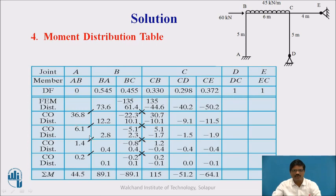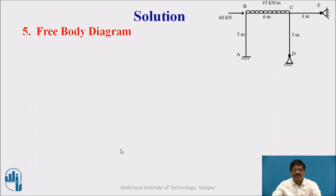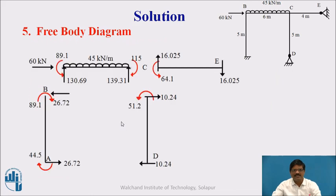Then take the summation of all these members: AB, BA, BC, CB, CD, and CE. All the summations we can take here. These are the final moments of the members, and these we can represent with the help of this free body diagram.